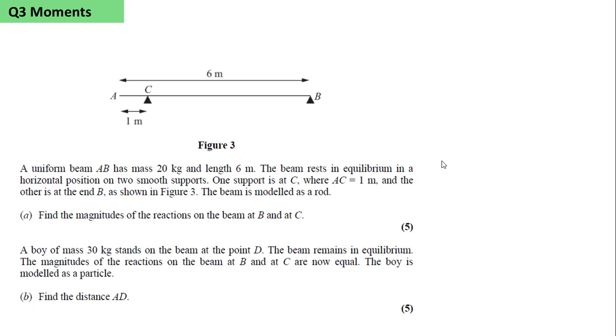A buoy of mass 30kg stands on the beam at a point D. The beam remains in equilibrium. The magnitudes of the reaction on the beam at B and C are now equal, and the buoy is modelled as a particle. So we add the mass as before, we add the two equal reactions, and we add the buoy at a distance little d from the point B.